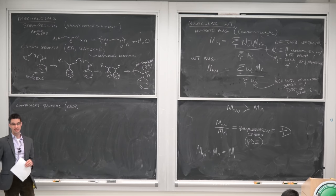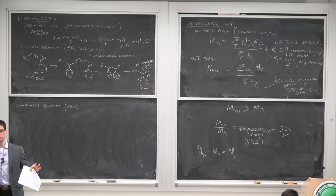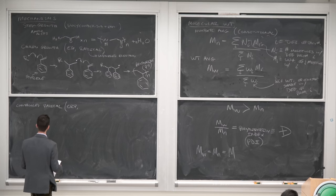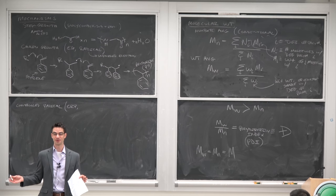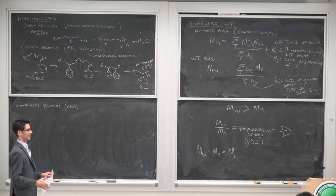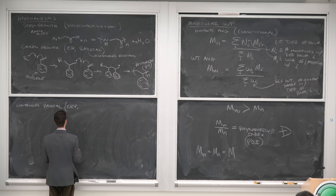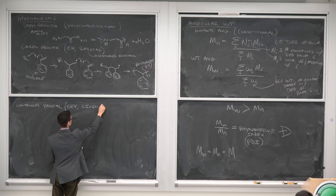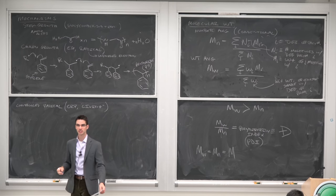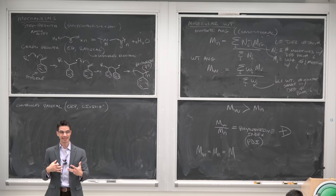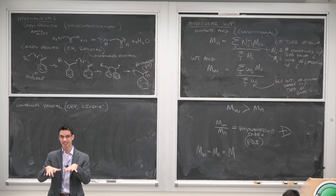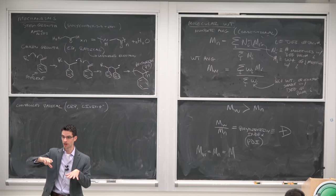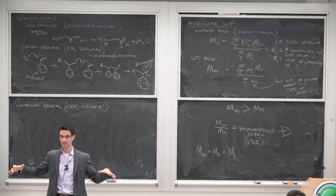CRP is not the only approach to controlled chain growth; there are also anionic methods. A living polymerization is one where the polymer chain is still reactive: if the reaction stops because monomers are exhausted and you add more, the chains continue to grow.